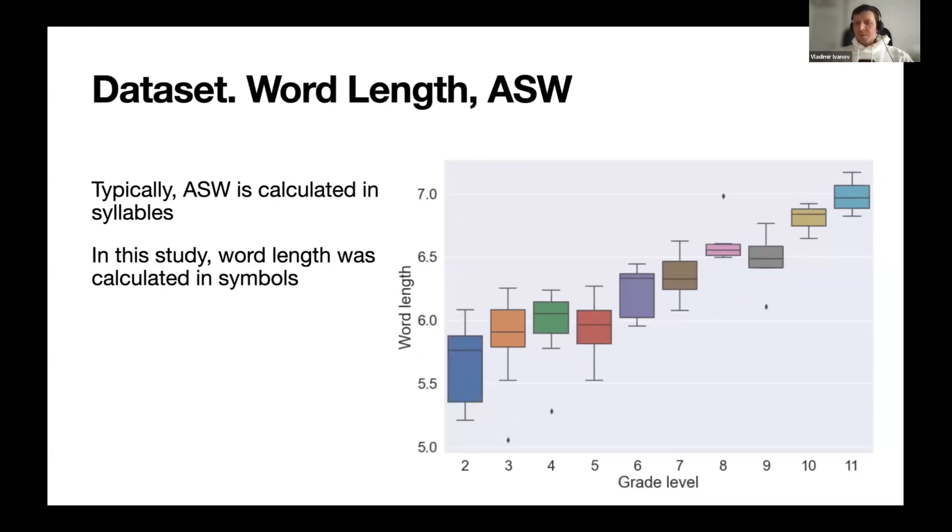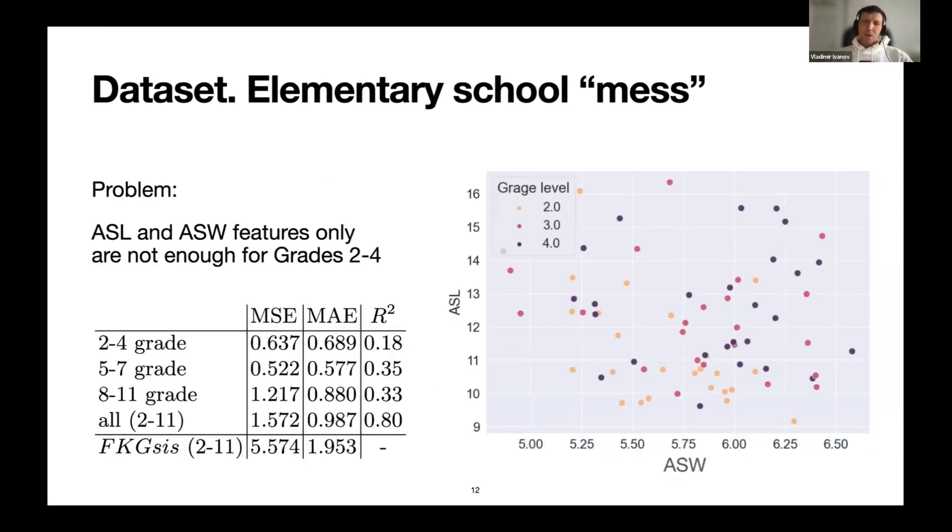The same, maybe even worse, for word length. We calculate word length in symbols, but the same happens if you calculate in syllables. They highly correlate to each other. For this study we calculated this parameter in terms of symbols. Again you can see this mixture of second to fourth grade that we consider elementary school. That's kind of a problem.